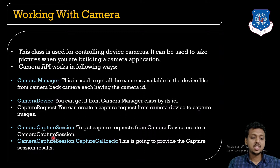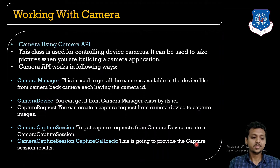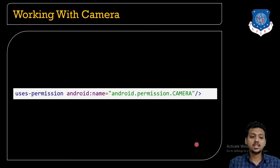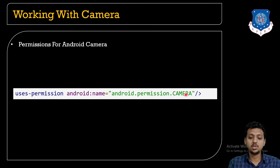CameraCaptureSession is used to get the capture request from the CameraDevice — you need to create a capture camera session. CameraCaptureSession.CaptureCallback provides the capture session result. These are all the components of the Camera API. For Android camera permissions, you need to write in the manifest: uses-permission android:name="android.permission.CAMERA".